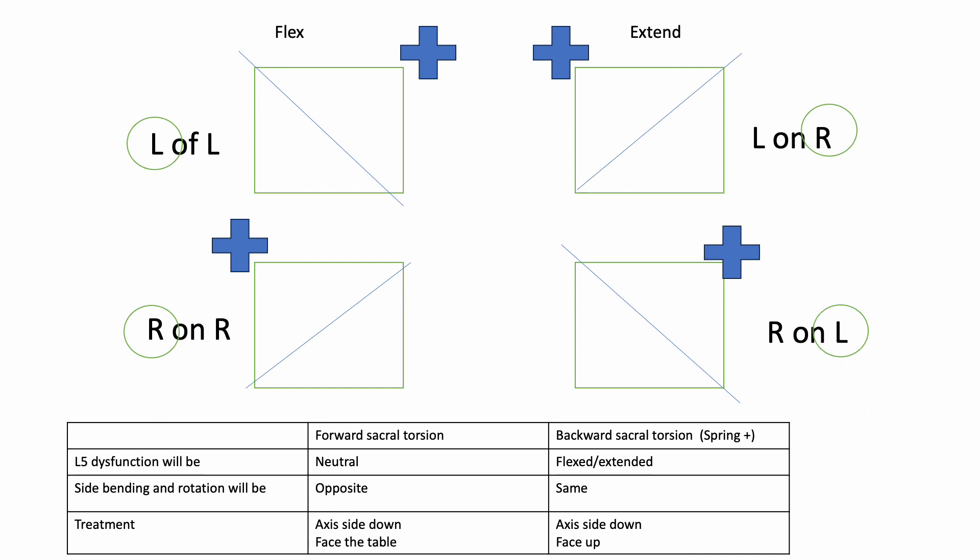If you have confusion, like if you think 'okay, it's right on left, what is it going to look like? Where's the axis going to be? Where's it going to be shallow?'—you have it on your cheat sheet, you have it all written out.